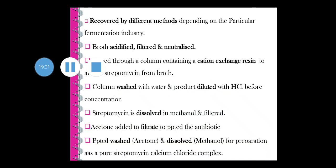Streptomycin is recovered by different methods depending on the fermentation industry. The fermentation broth is acidified, filtered, and neutralized. It is passed through a cation exchange resin column to absorb the streptomycin. The column is washed with water and streptomycin is eluted with hydrochloric acid before concentration. The streptomycin is dissolved in methanol and filtered. Acetone is added to the filtrate to precipitate the antibiotic. The precipitate is washed with acetone and dissolved in methanol for preparation as pure streptomycin calcium chloride complex.